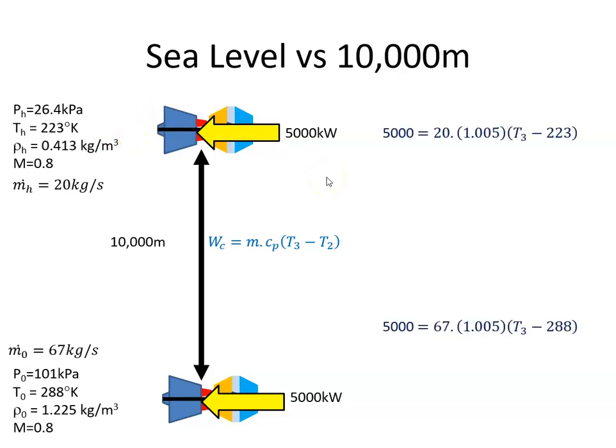If I plug the values in, so I'm saying 5000 kilowatts is equal to 20 because we got the mass flow here of 20 kilograms per second. This is the value for the specific heat capacity of air at constant pressure, it's 1.005 kilowatts per kilogram degrees Kelvin. We're leaving everything in kilowatts.